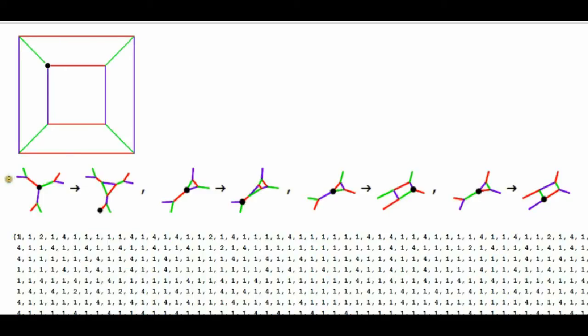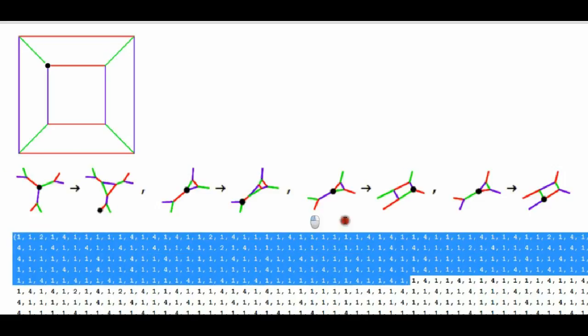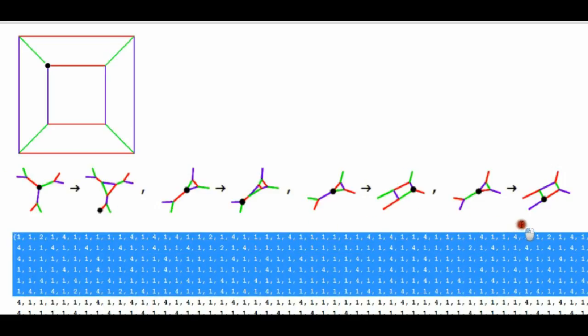And so this list here shows which operation gets applied at which time step. On the first time step, this left operation number one gets applied. On the second time step, again, operation one gets applied. On the third time step, operation two gets applied, and so on. What's interesting here, if we have a look at this list, is it seems like on most of the time steps, operation one gets applied. But every now and again, a different operation gets applied.